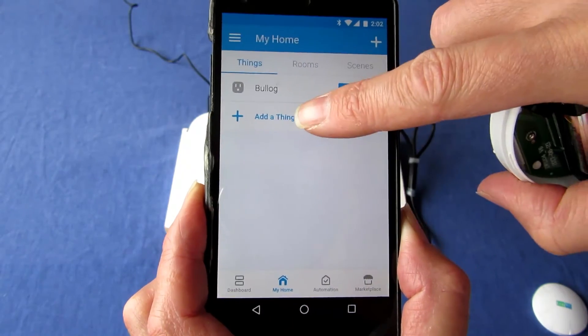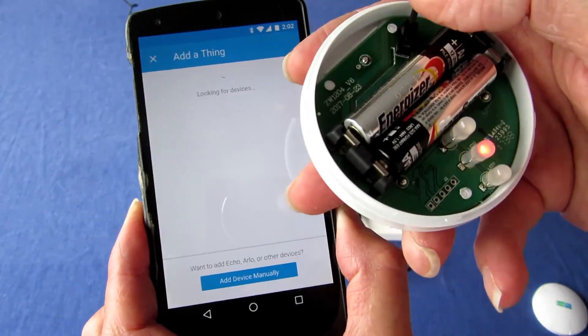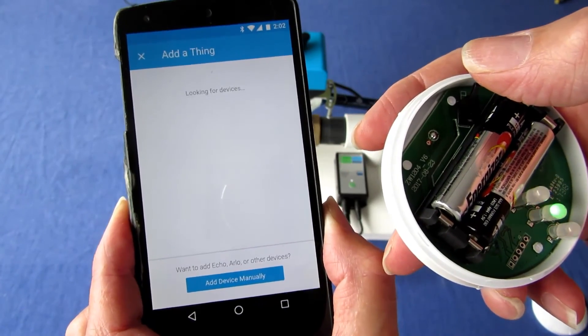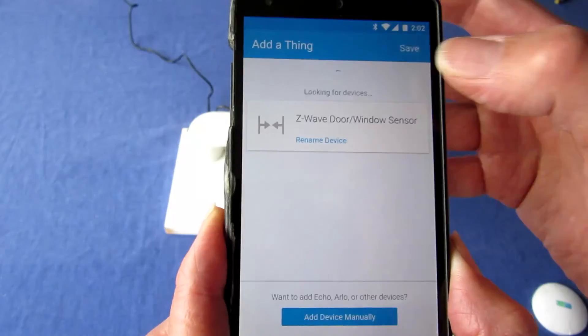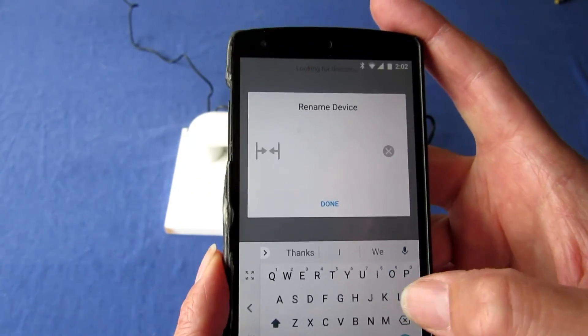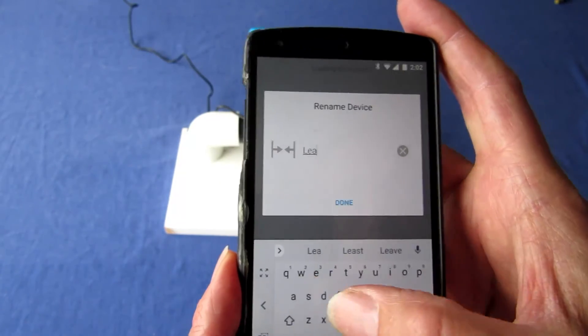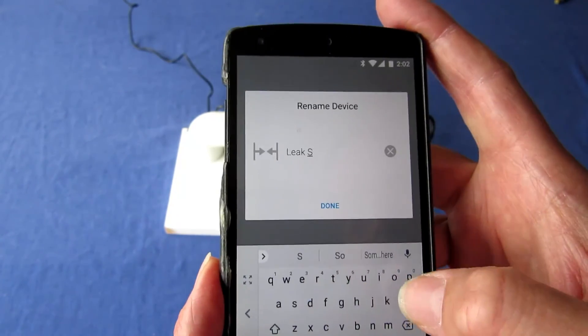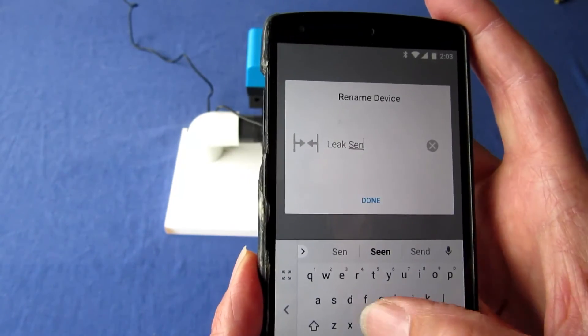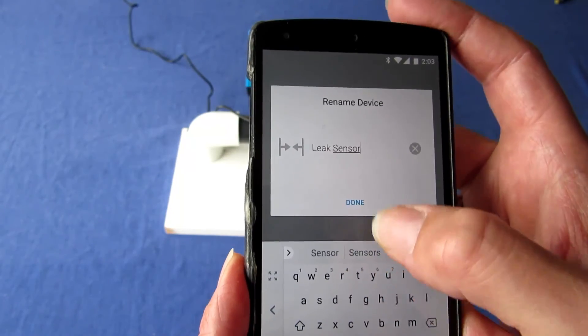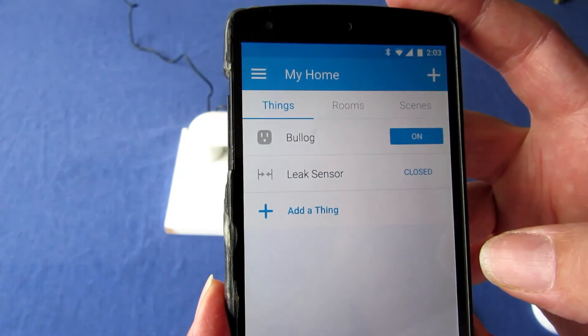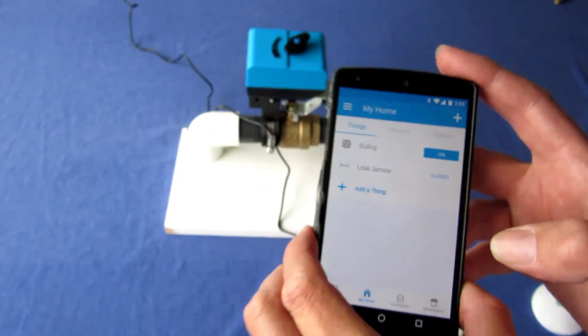Tap the Add a Thing button to put the hub into inclusion mode. Press the button in the leak sensor five or six times quickly. The sensor should pair as a Z-Wave door window sensor. Tap on the device name to change it. Your leak sensor is now configured for SmartThings.